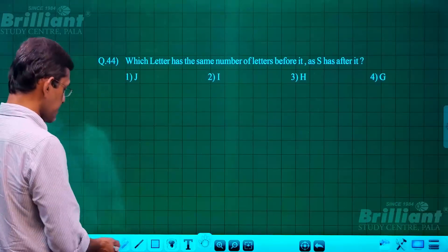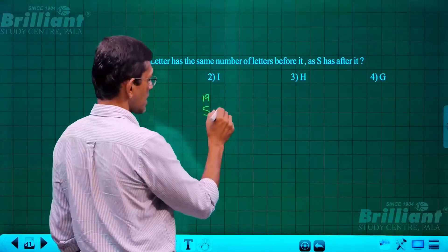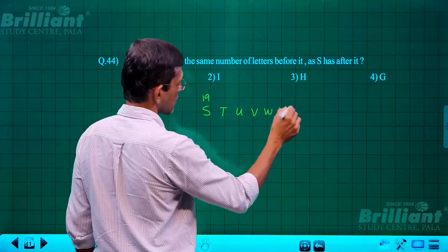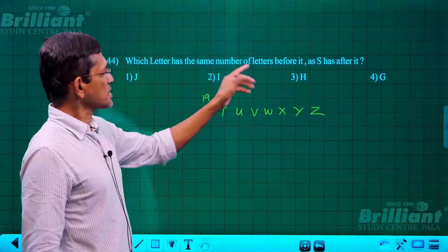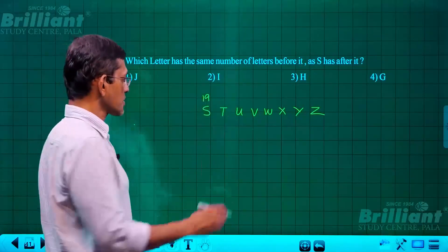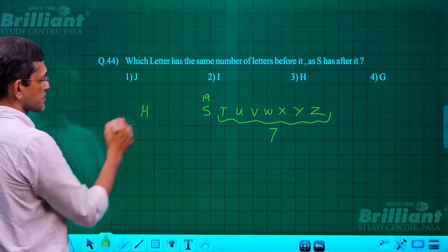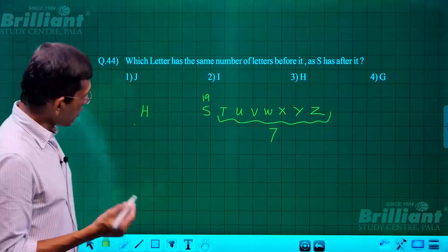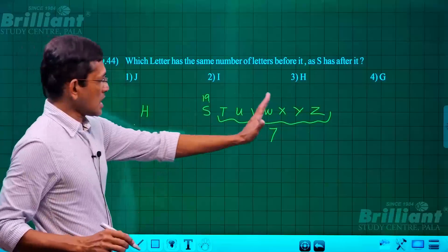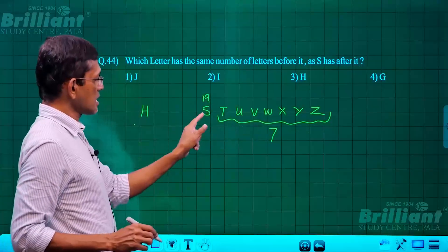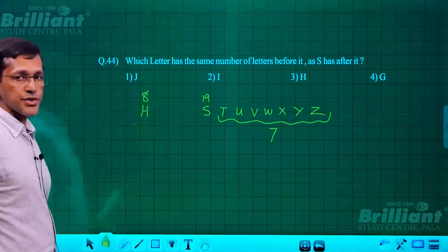Question 44: which letter has the same number of letters before it as S has after it? S is the 19th letter; letters after S are T U V W X Y Z — that's 7 letters. So we need the letter with 7 letters before it, which is H (the 8th letter). The easiest method: S is 8th from the right end; the 8th letter from the left end is H. Answer: H.